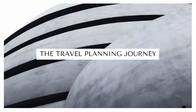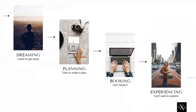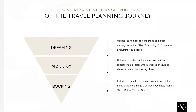Now let's look at the travel planning journey. We break the travel planning journey into four main phases: dreaming, planning, booking, and experiencing. Looking at each phase individually helps us understand where our customers are and what content will appeal to them. We personalize content for each phase. For example, in the dreaming phase we can add inspiring messaging on the homepage. For planning, we can use promo tiles that call out specific offers and discounts. And for booking, we use urgent messaging that encourages conversion.